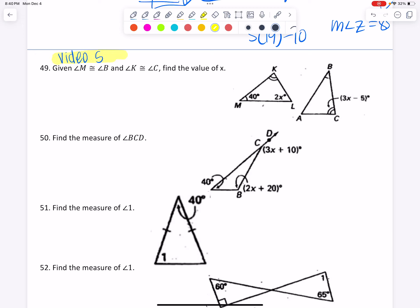Video five, question 49. This is very similar to a problem that we've seen before, but this seems to be what many students struggle with. And so there are several of these. Angle M is congruent to angle B, so I'm going to mark the 40 there as well. Mark it in both.